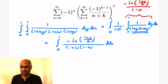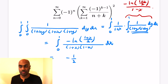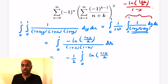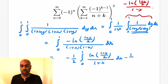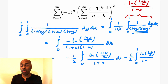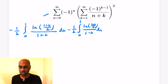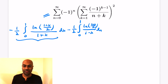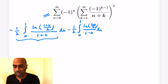That's the integral we want to compute. Our strategy is to split it up so the denominator doesn't have two polynomials — just a 1 plus x in one term and 1 minus x in the other. We'll do a partial fractions decomposition, giving us negative one-half times the integral from 0 to 1 of ln of (1 plus x)/2 over (1 plus x) dx, and a similar term with 1 minus x in the denominator instead.